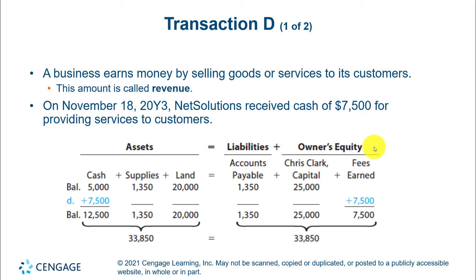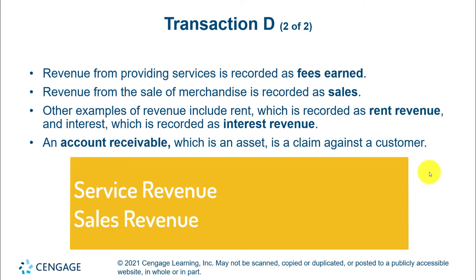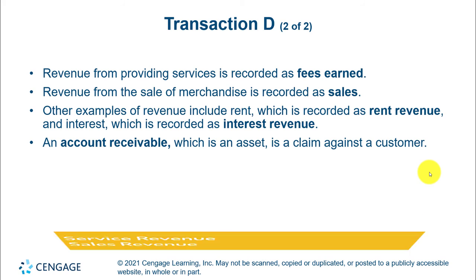It's called revenue. You can have many kinds of revenue: rent revenue, interest revenue from earning interest. The two most common types are service revenue and sales revenue. Service revenue is when you provide services and someone pays you. Sales revenue is usually when you sell a good, a product.